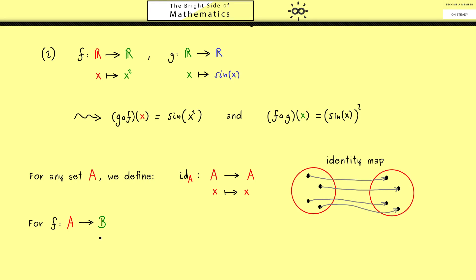Now if you consider any other function from A into another set B, the composition identity map after f wouldn't change anything. You would get out f again.